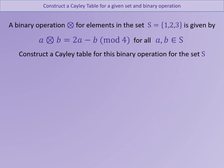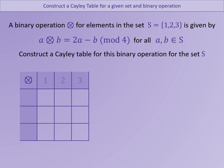A binary operation is defined on the set of numbers 1, 2 and 3 as a operation b equals 2a minus b, reduced mod 4. Pause the slide and construct a Cayley table for this operation. Remembering that the numbers down the side represent a and the numbers across the top represent b, the answers would be as follows.